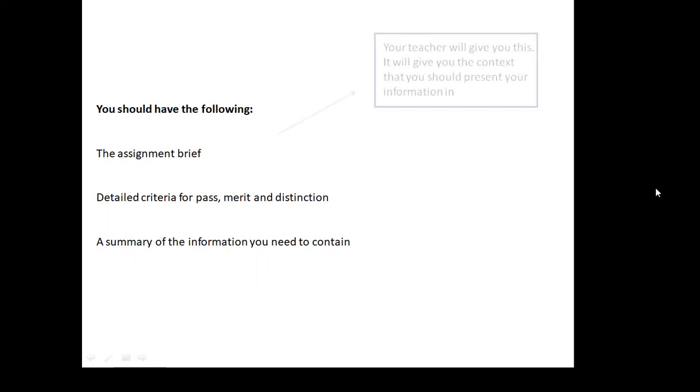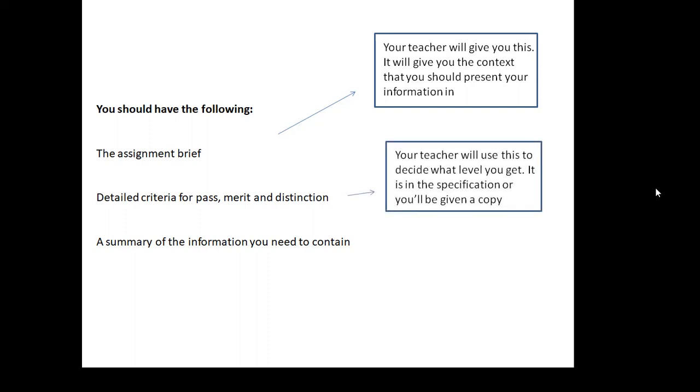Now, the assignment brief will give you some kind of a context that you're supposed to present your information in. It may say something like, you work for a magazine and your job is to produce an article on blah, blah, blah. So it's just giving you context. It doesn't actually give you a great deal of detail. What is very important is the criteria for pass, merit and distinction. You must, must look at these carefully. If you don't do everything it says for a pass, then you don't get a pass.